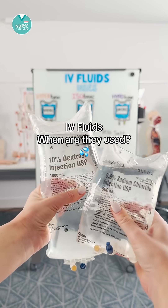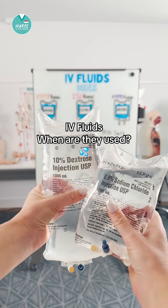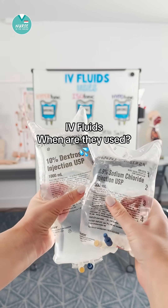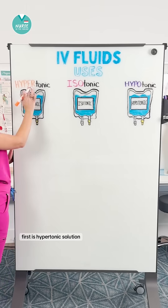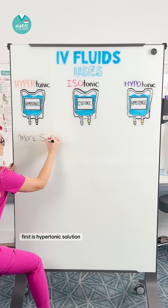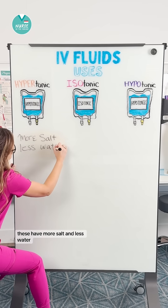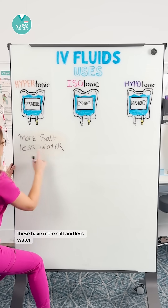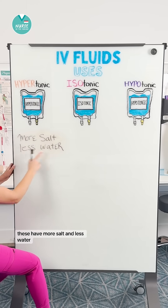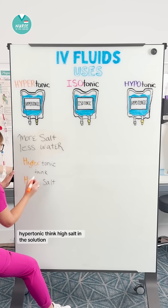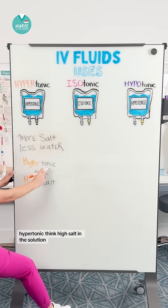Let's talk about when to use the different types of IV fluids. First is hypertonic solution. These have more salt and less water. Hypertonic — think high salt in the solution.